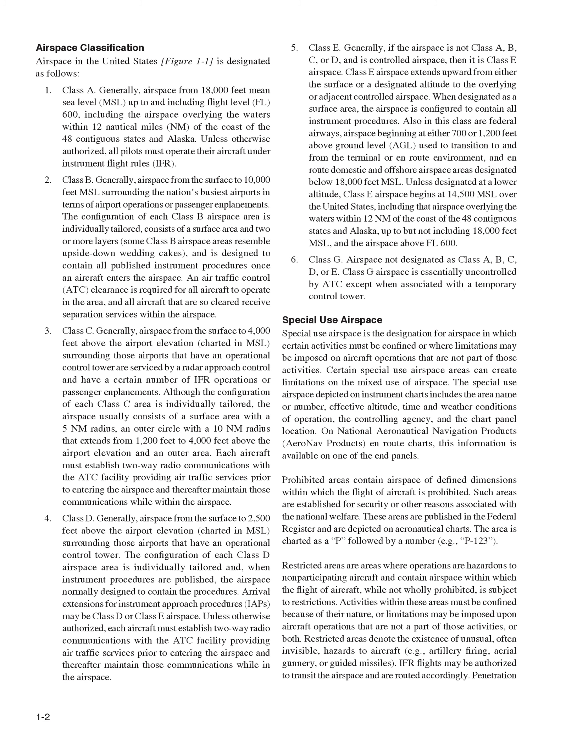Class B: generally airspace from the surface to 10,000 feet MSL surrounding the nation's busiest airports in terms of airport operations or passenger enplanements. The configuration of each Class B airspace area is individually tailored, consists of a surface area and two or more layers, and some Class B airspace areas resemble upside-down wedding cakes. It is designed to contain all published instrument procedures once an aircraft enters the airspace. An air traffic control, ATC, clearance is required for all aircraft to operate in the area, and all aircraft so cleared receive separation services within the airspace.